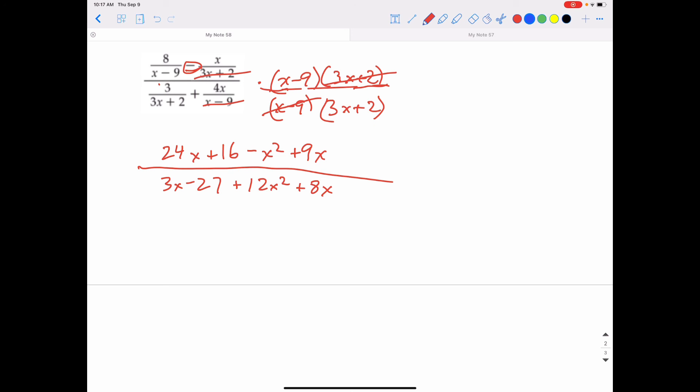Combine your like terms. I do have a negative x squared in the numerator. I have 24x and 9x, and that's positive 33x plus 16. All over, and the denominator, I have 12x squared. I have 3x and 8x, and that will give me 11x plus 27. Once again, see if you can factor anything out of the numerator and the denominator that cancel each other out. You can't do so on this one, so once again, this will be our final answer.